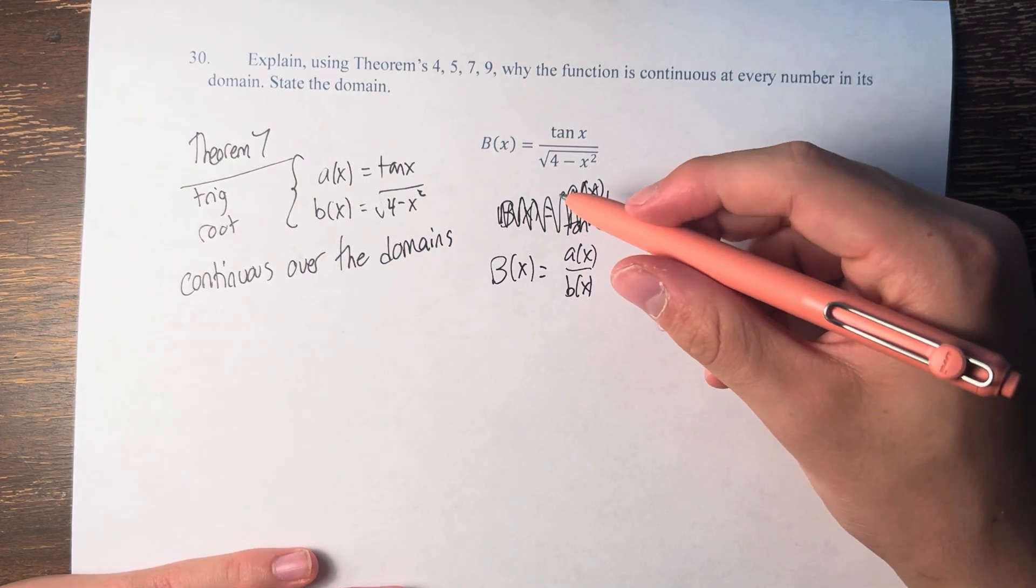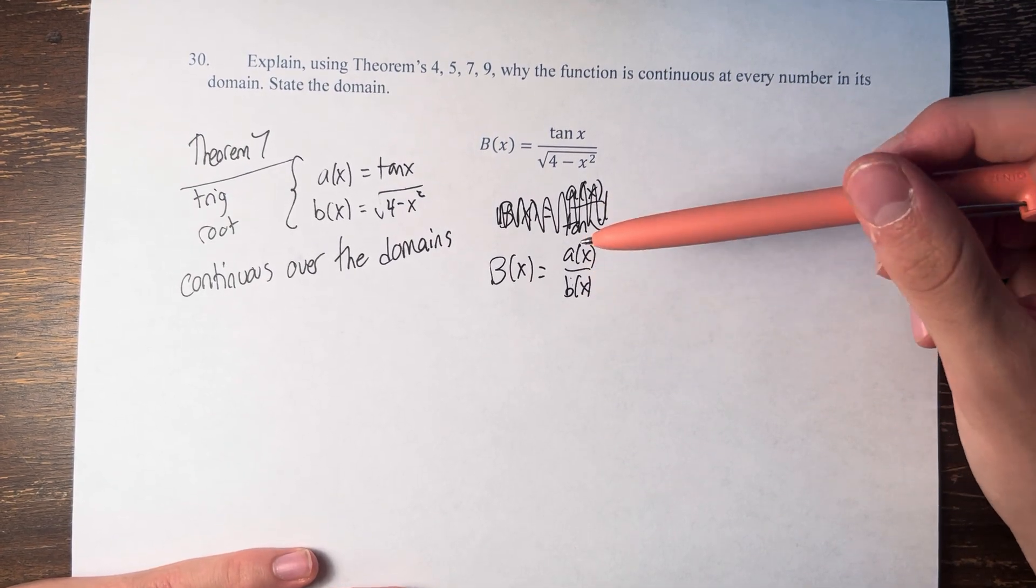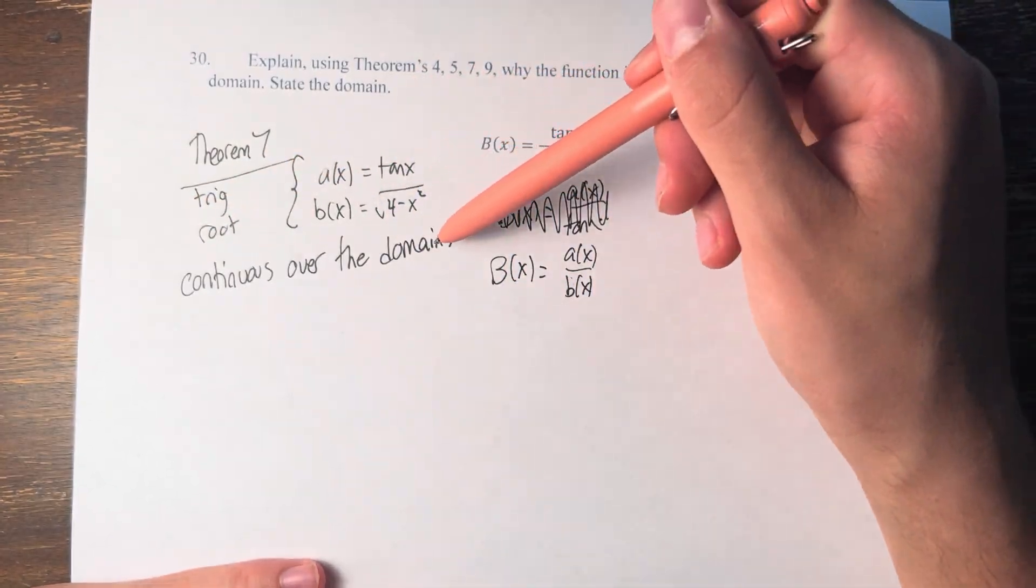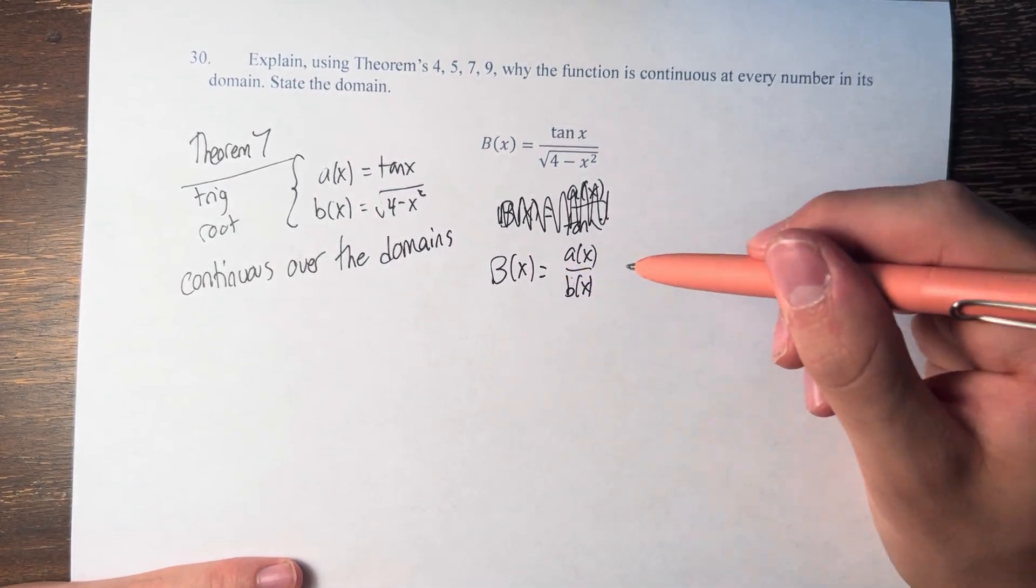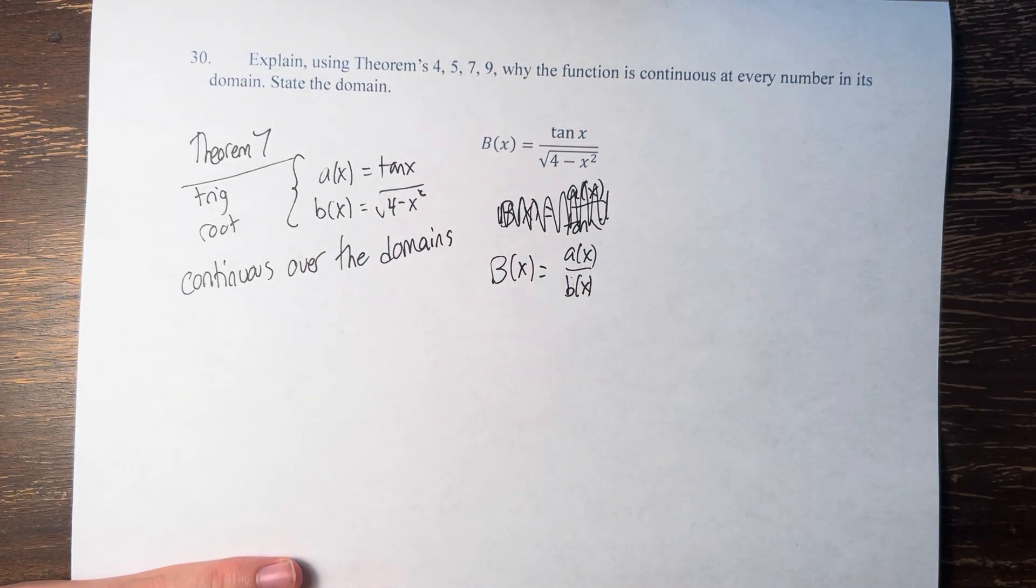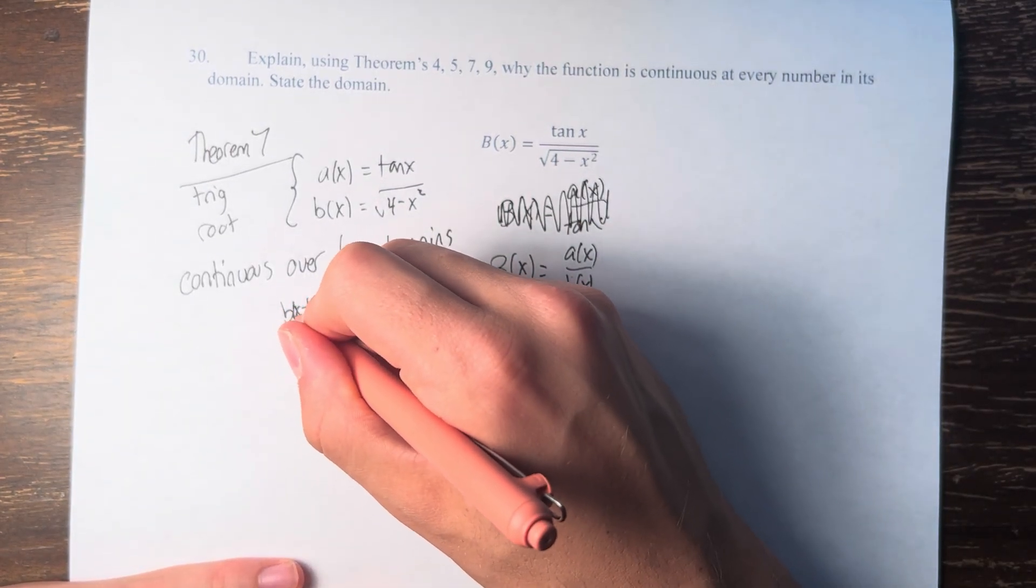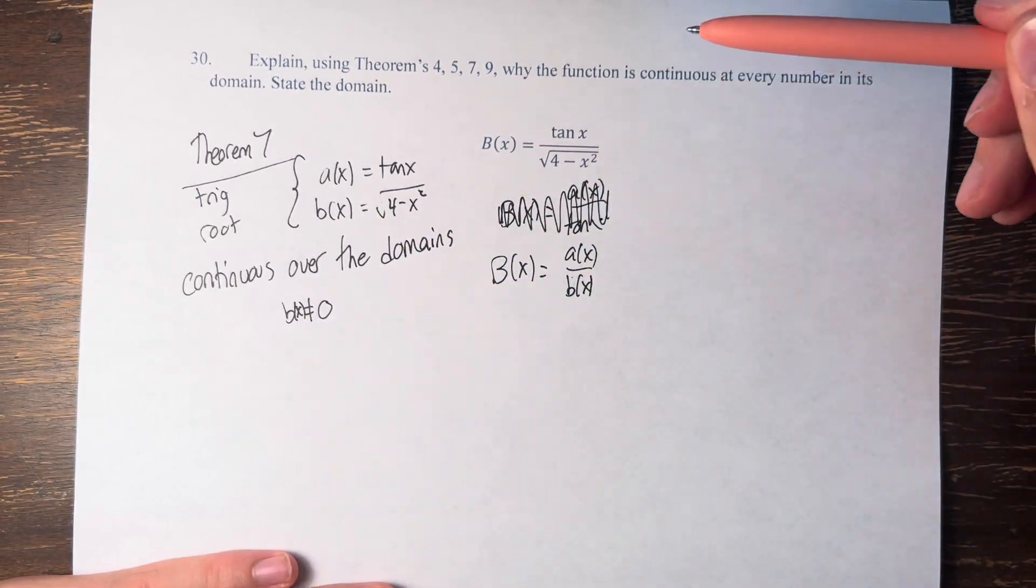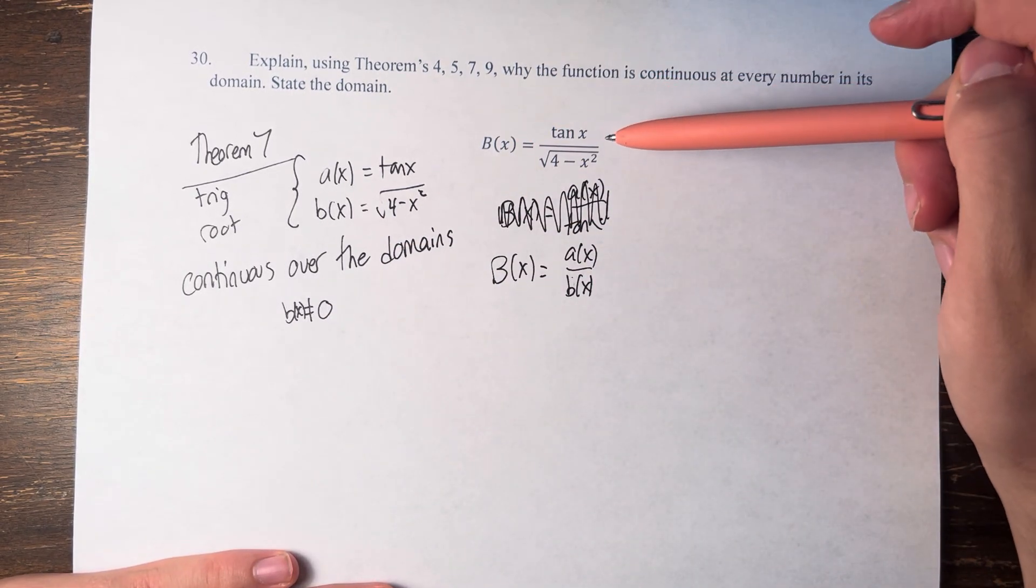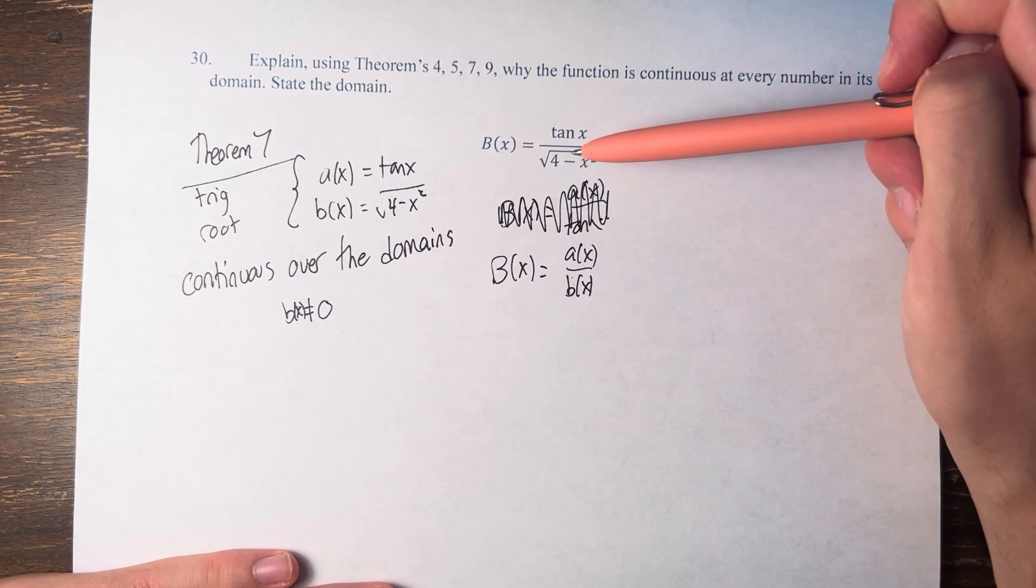Therefore, we can say that the overall function is continuous at every number in the domain of these two functions, and therefore of the function as a whole, with the added caveat that since it's a fraction, b(x) can also not equal 0. However, that is an implicit addition to the domain by the fact that it is a fraction in the first place.